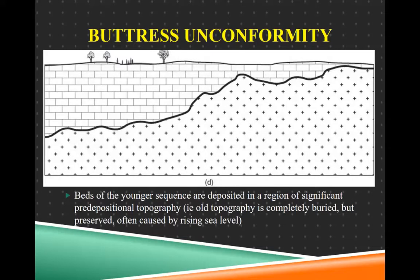The last type is a buttress unconformity. This is a special version of either the disconformity or the nonconformity, and it's special because there is actual topography — hills and valleys — that are completely buried. So it's not just a slightly wavy bumpy surface; there are whole hills and valleys that get completely covered in sediment, which takes a lot of deposition.